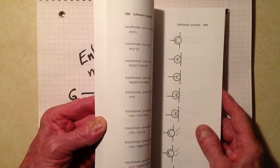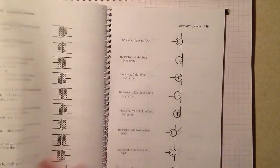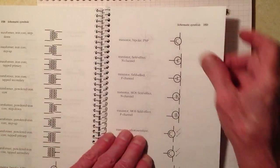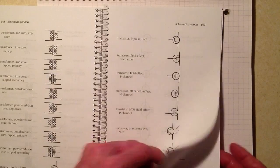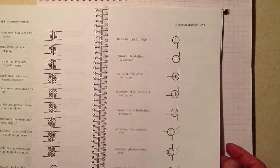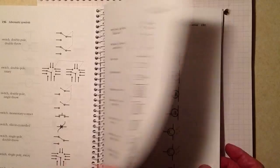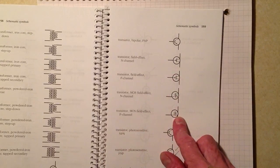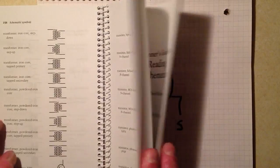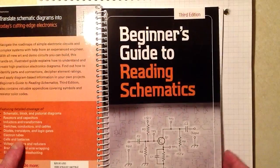the beginner's guide to reading schematics. You will find all of these schematic symbols. But I didn't include enhancement and depletion mode. I did not distinguish between those. In fact, this book doesn't even get into the enhancement mode devices.